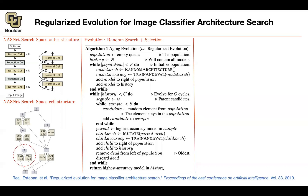Now we keep evolving for C cycles or generations. First, we sample S candidates from the population — randomly sampling S models from our initial population. These are random elements that form the sample. So far everything was random — random search. Here is where selection comes in. The one doing the best in terms of accuracy from the sample is going to be your parent. We choose the best one from the sample — that's the selection.